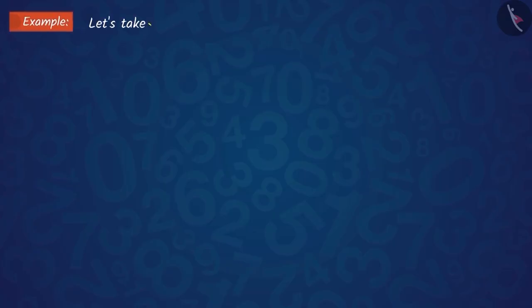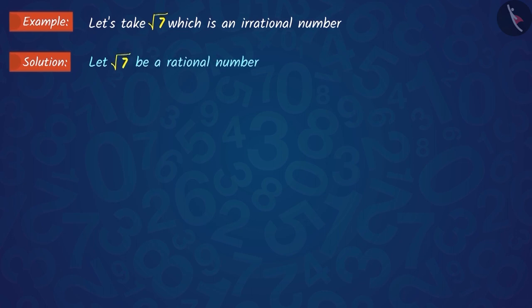Let us consider the square root of 7 which is an irrational number. Suppose that √7 is a rational number. Therefore, we can obtain two integers a and b such that √7 equals a upon b and b is not equal to 0.